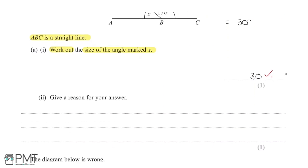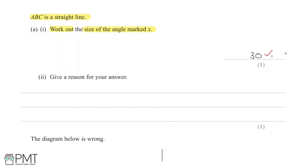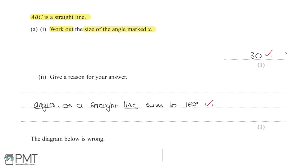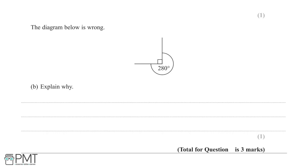Part (a)(ii) asks us to give a reason for our answer. The reason is that angles on a straight line sum to 180 degrees. The mark scheme requires the key words 'angles' and 'line' to be included in your answer. You get one mark for a correct reason containing those words.